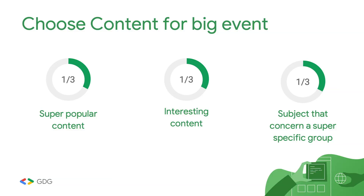When you choose content for a big event, try to have at least a third of super great content that will interest the majority of people, a third of great content, and keep some content that is more specific or experimental. If you want to test new content, don't put it in all the events — just a small part, and it will be great.